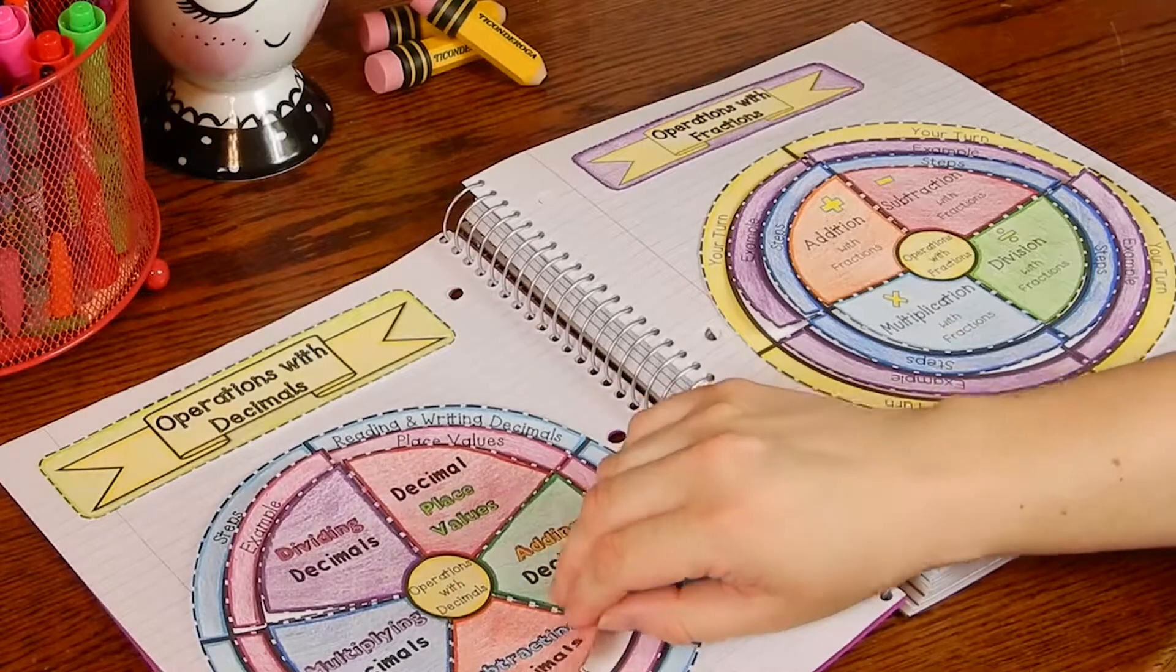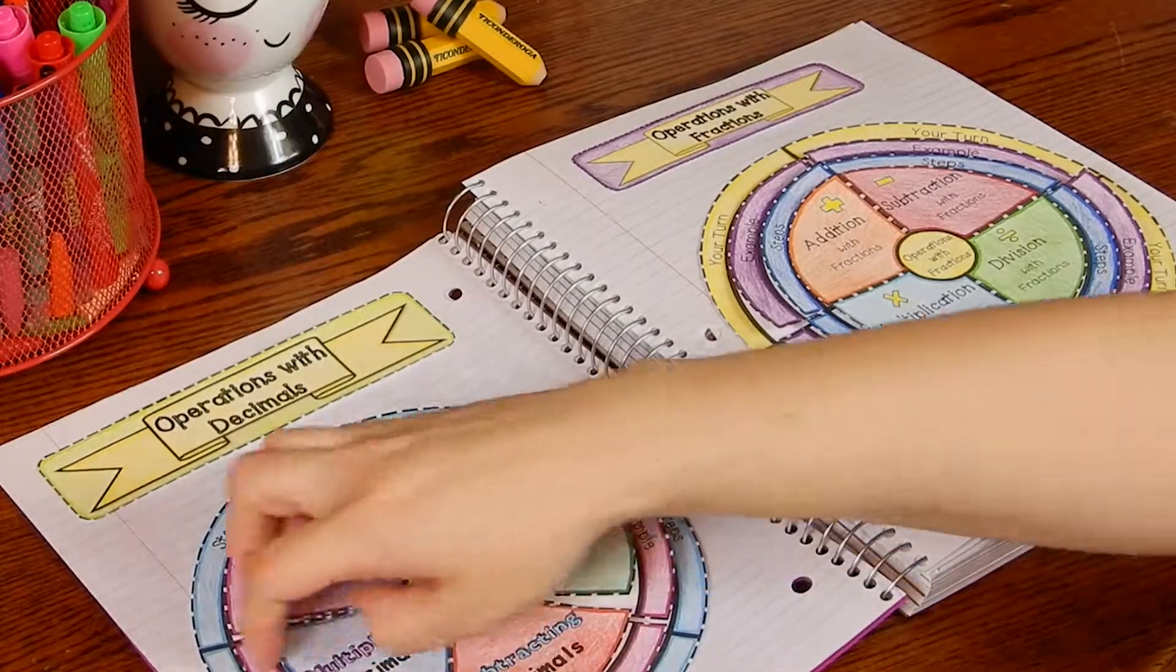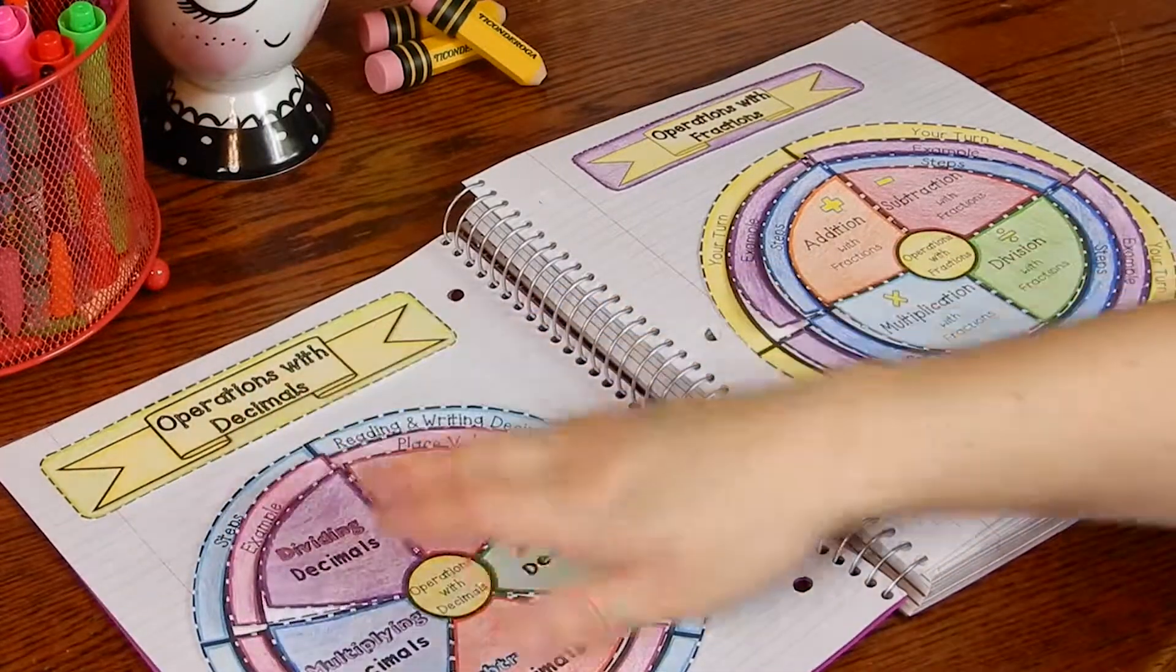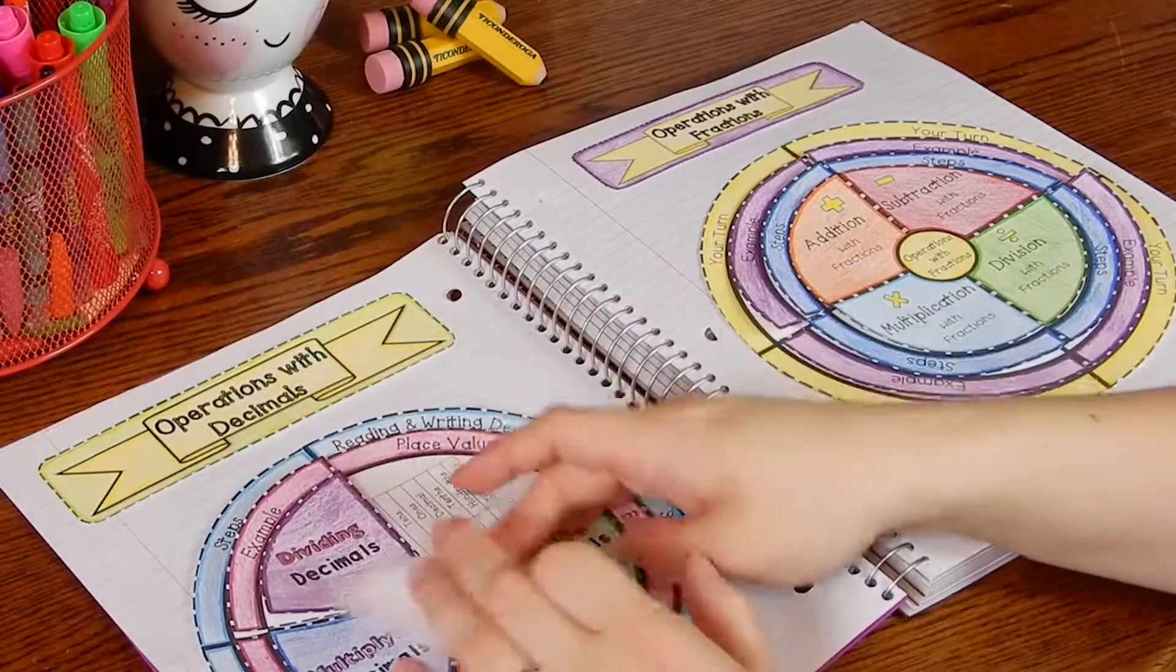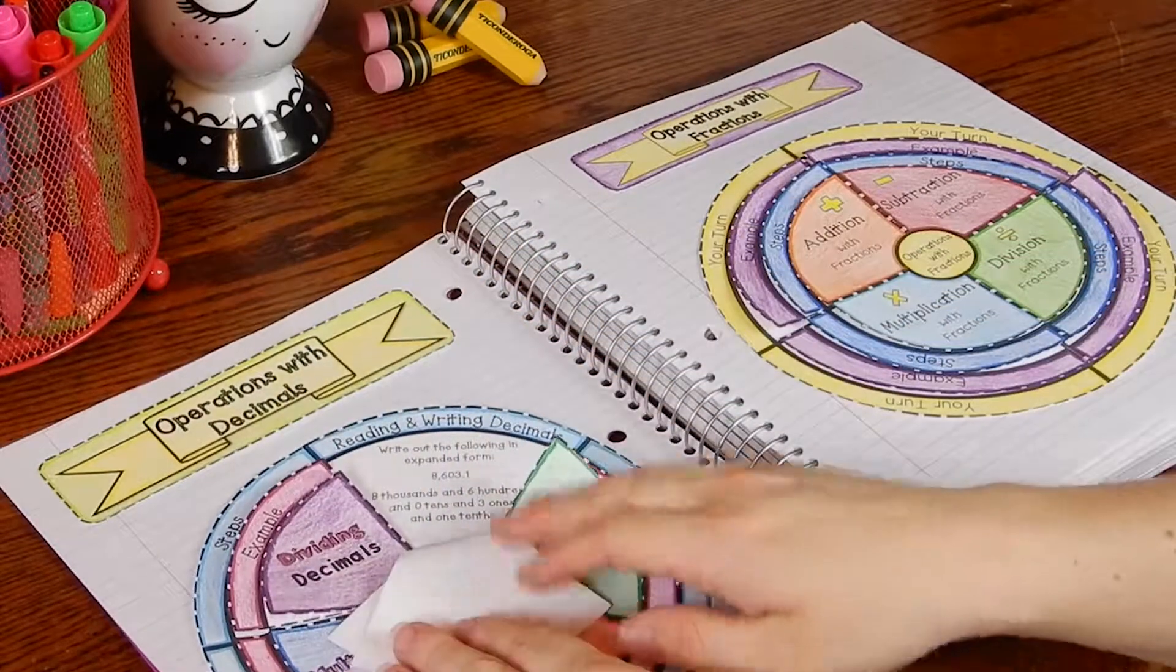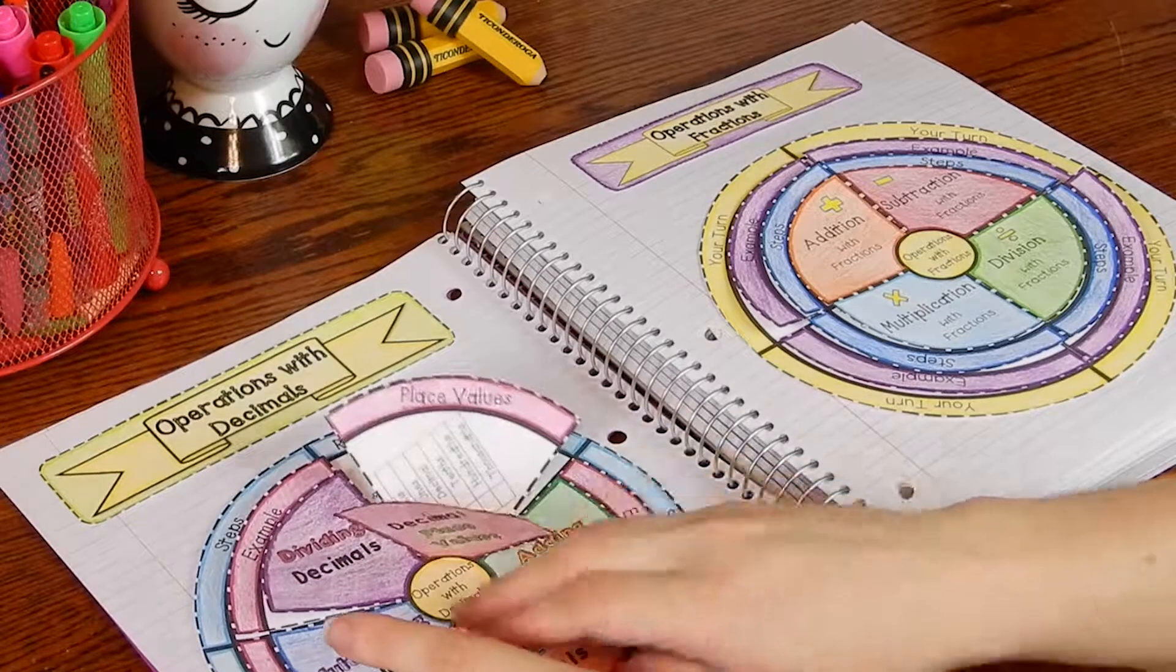So this one again is on decimals, so you can see it gives an example and then it goes over the steps, goes over decimal place values, and then also goes over how to read and write decimals.